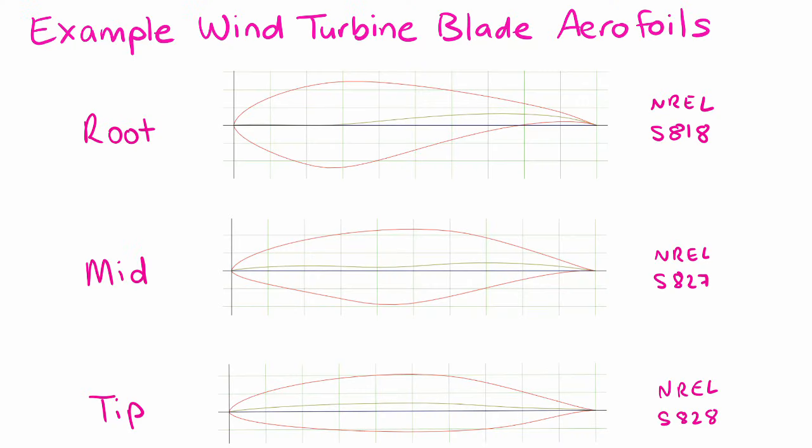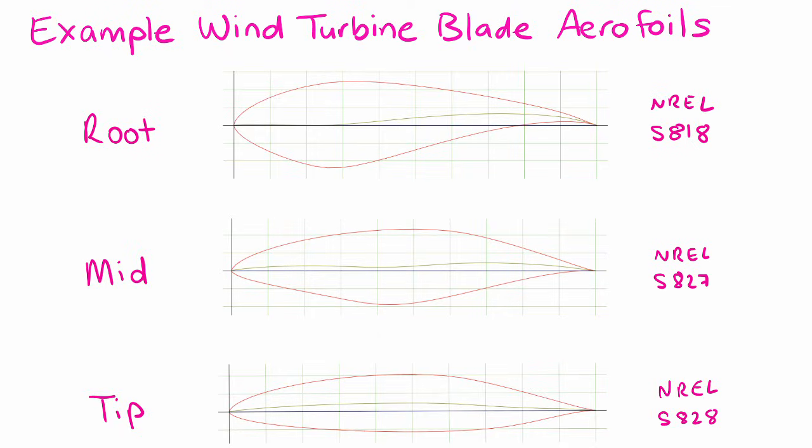One last remaining parameter is the lift coefficient, which is a function of the shape of the aerofoil. The aerofoils of a wind turbine blade commonly differ along the span for aerodynamic and structural reasons. The outboard blade section experiences higher relative wind speed and contributes more torque, making aerodynamic performance critical at the tip — so thin, high-lift aerofoils are typically used there. On the other hand, the inboard blade sections close to the root have less effect on aerodynamic performance but a large effect on structural behaviour, so thicker aerofoils with better structural characteristics are used in that area.